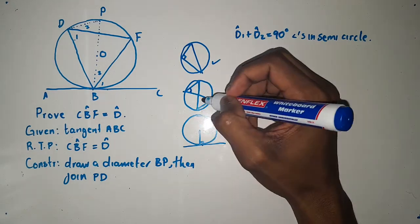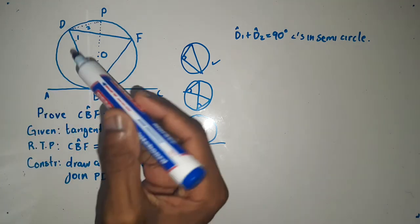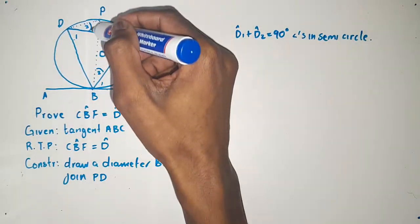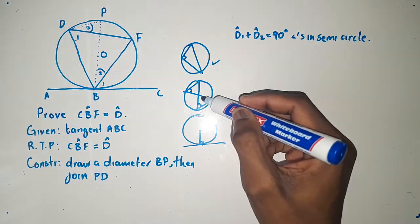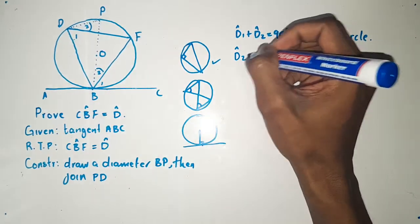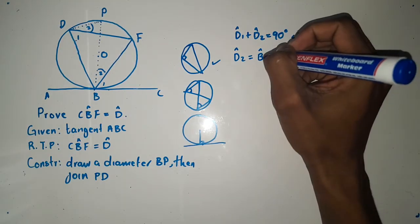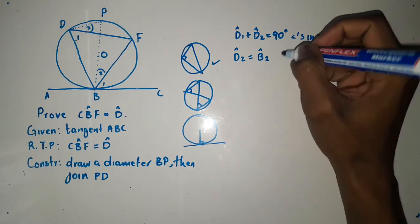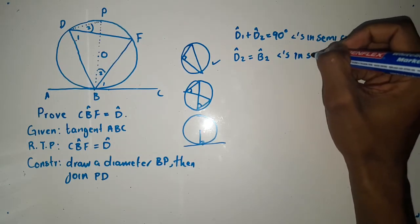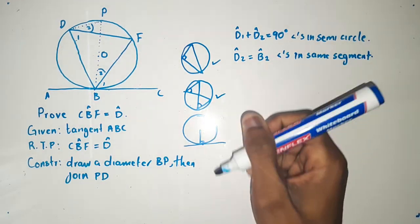For the second theorem, angle D2 equals angle B2. This is because they are angles in the same segment.